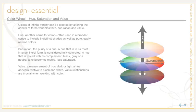Colors of infinite variety can be created by altering three variables: hue, saturation, and value. Hue is simply another name for color, often used broadly to include indistinct shades as well as pure, easily named colors. Saturation is the purity of a hue — at its most intense form it is fully saturated. A hue mixed with its complement, or black, gray, or a neutral tone, becomes muted or less saturated.